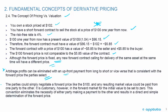The parties could simply negotiate a forward price like $100, and any resulting market value could be paid from one party to the other. It is customary, however, in the forward market for the initial value to be set to zero. This convention eliminates the necessity of either party making a payment to the other and results in a direct and simple determination of the forward price.